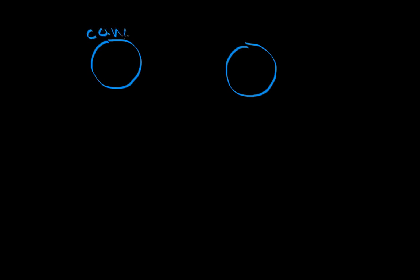Welcome. Let's imagine that we have two cells: one cell on the left and another cell on the right. The cell on the left is a cancer cell, and the cell on the right is normal.